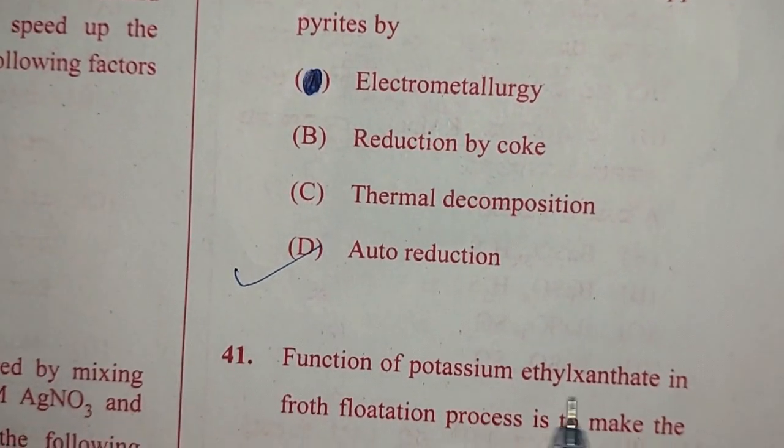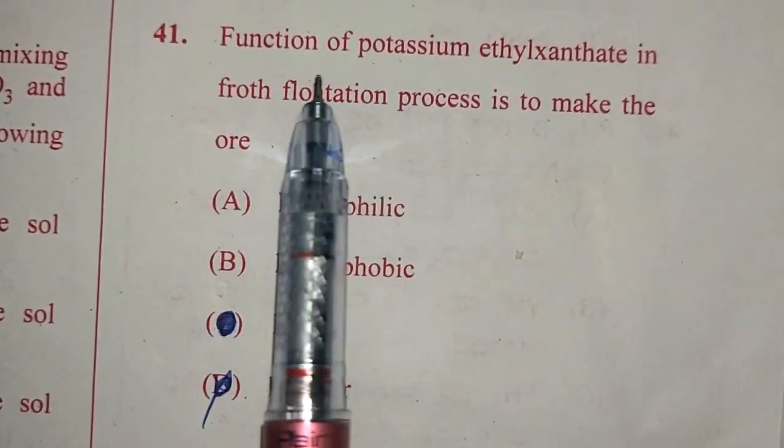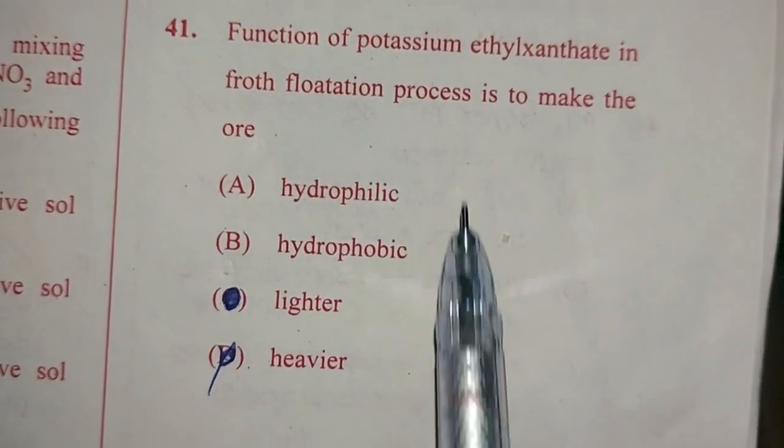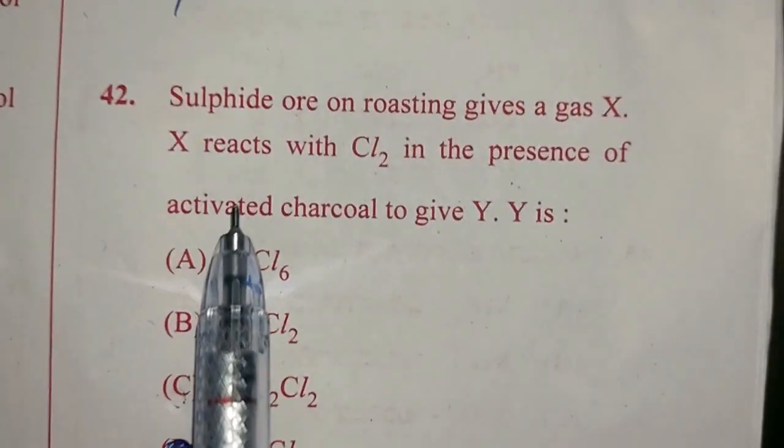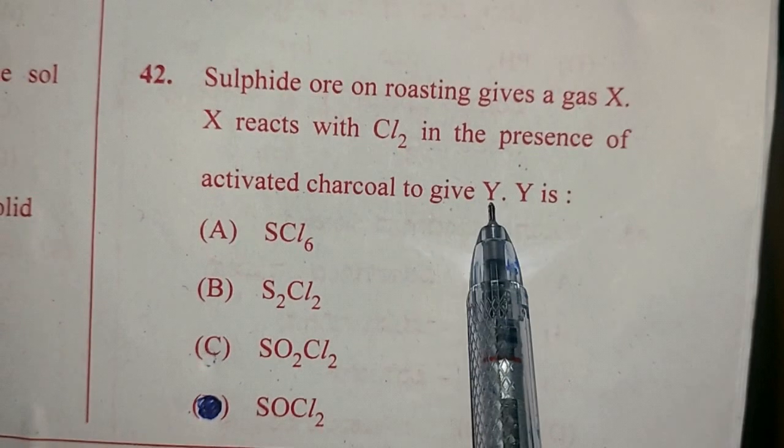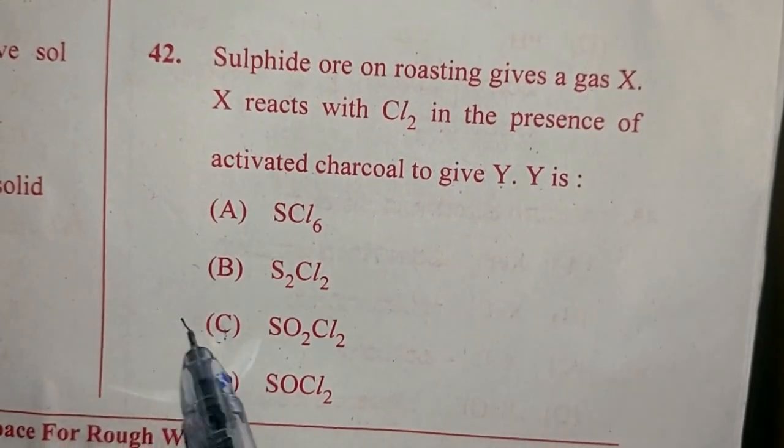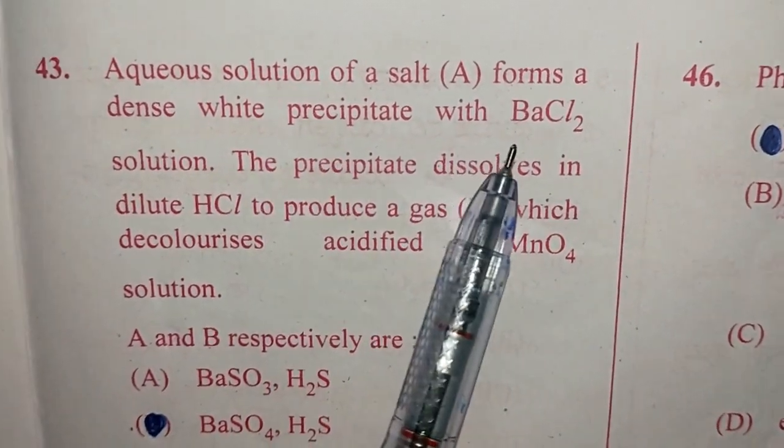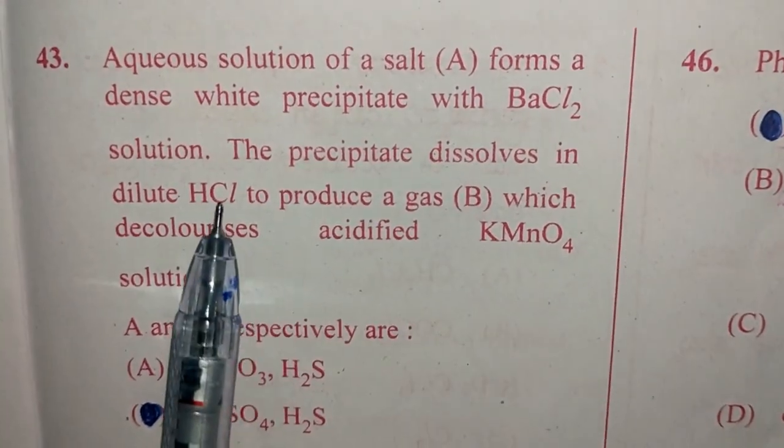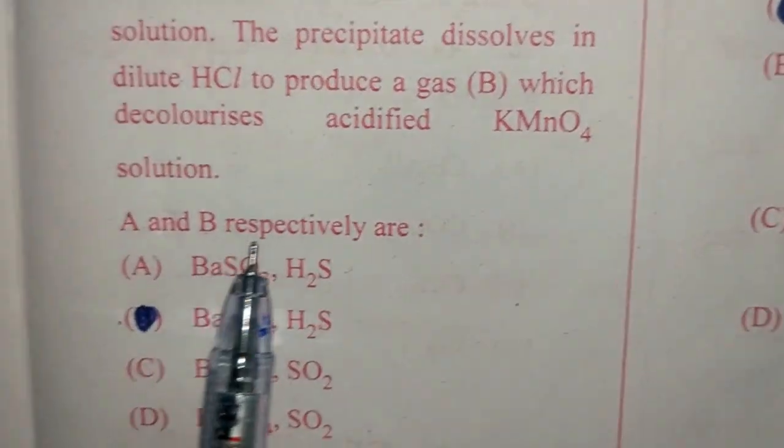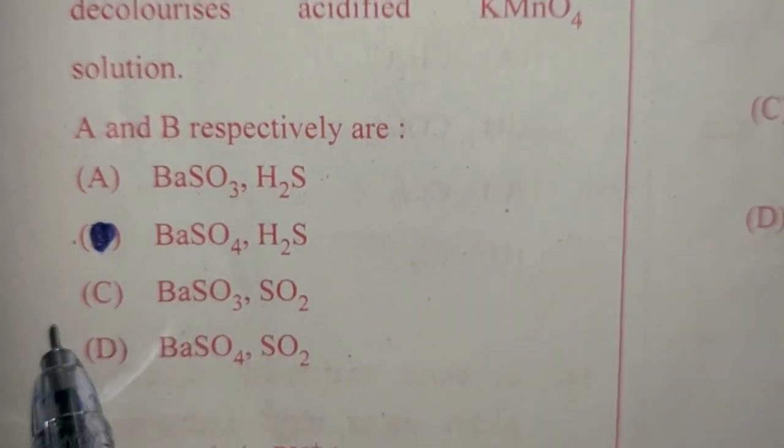Question number 41. Function of potassium ethyl xanthate in froth flotation process is to make the ore hydrophobic. And the answer for this is option B. Question number 42. Sulphide ore on roasting gives a gas X. X reacts with Cl2 in the presence of activated charcoal to give Y. And Y is, answer is option C. Question 43. Aqueous solution of salt A forms a dense white precipitate with BaCl2 solution. The precipitate dissolves in dilute HCl to produce a gas B which decolorizes acidified KMnO4 solution. And the answer for this question is option C, BaSO3 and SO2.